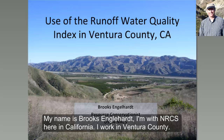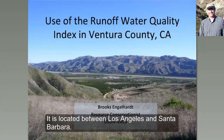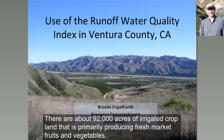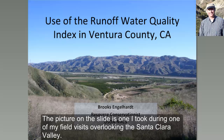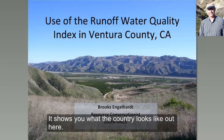My name is Brooke Singlehart. I'm with the USDA NRCS here in California. I work in Ventura County, California, which is located between Los Angeles and Santa Barbara counties. There's about 92,000 acres of irrigated cropland in Ventura County, primarily producing fresh market fruits and vegetables. The picture on this slide is one I took during one of my field visits, overlooking the Santa Clara Valley, showing what the country looks like out here.